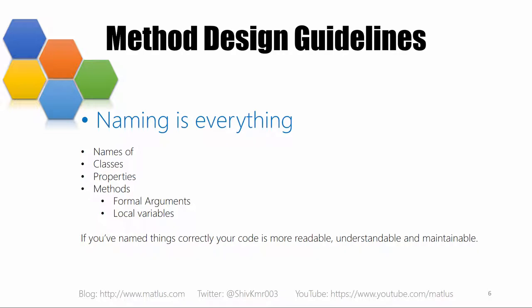Names are everything — names of classes, properties, methods, formal arguments, type names, and local variables. What I've found is when you're implementing a method you're struggling to get it right, so you're not thinking so much about readability or maintainability. At that initial stage the main focus is simply getting it to work.